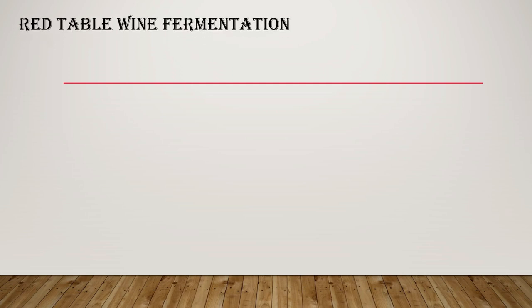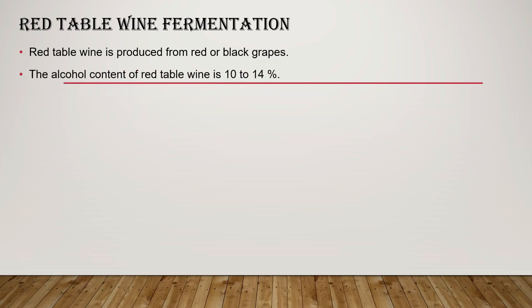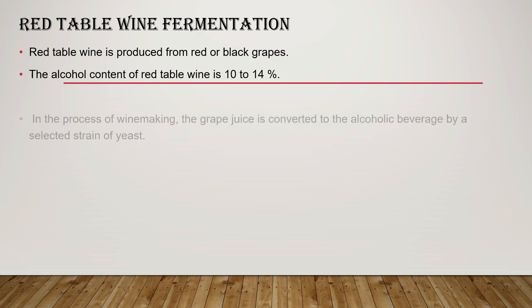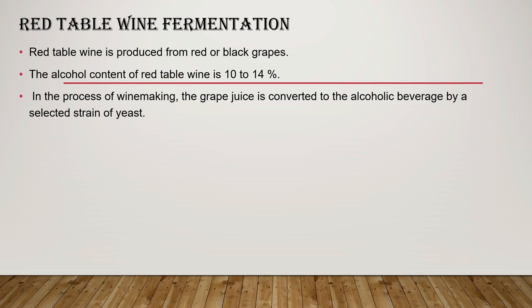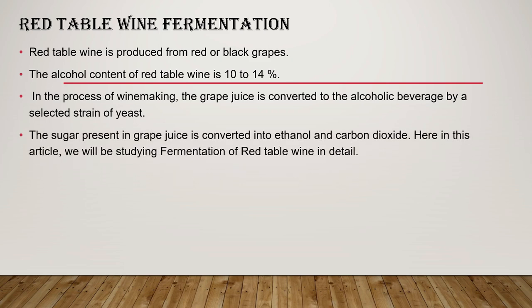We are going to discuss red table wine fermentation in detail. Red table wine is produced from red or black grapes and has an alcohol content of 10% to 14%. In the process of winemaking, grape juice is converted to an alcoholic beverage by a selected strain of yeast. The sugar present in grape juice is converted into ethanol, carbon dioxide, and by-products.